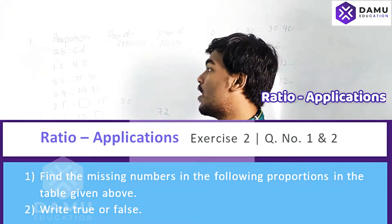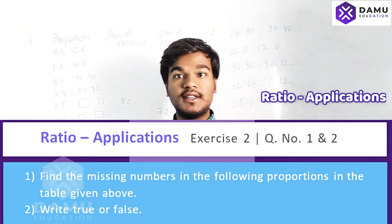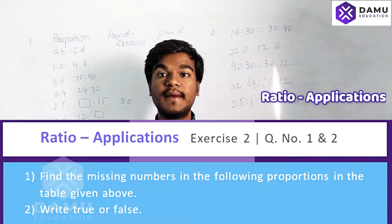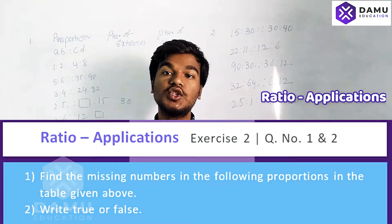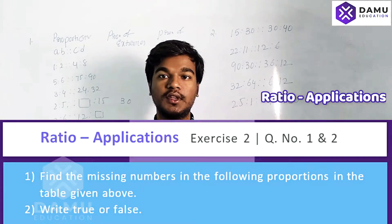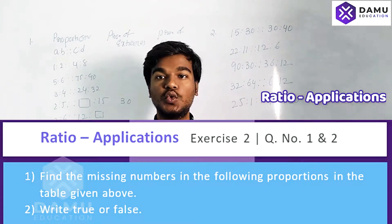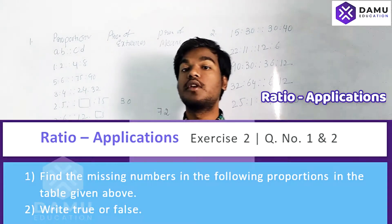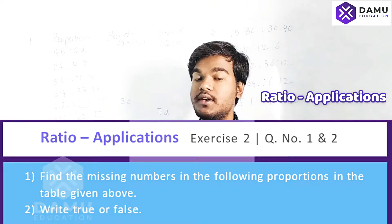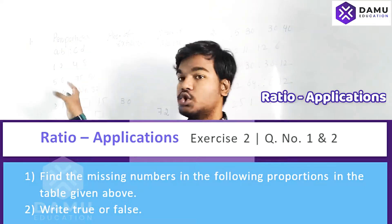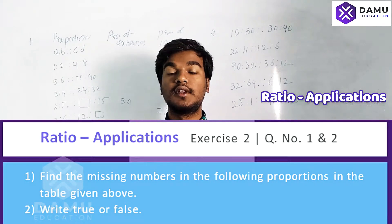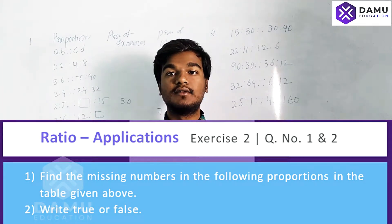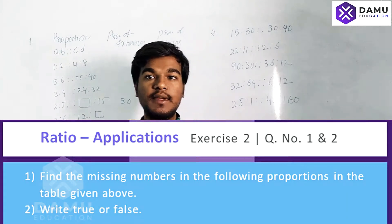In Exercise 2, our first question: we are given some proportions. What is meant by proportion? If you take two ratios and those two ratios are equal, then we call them a proportion.